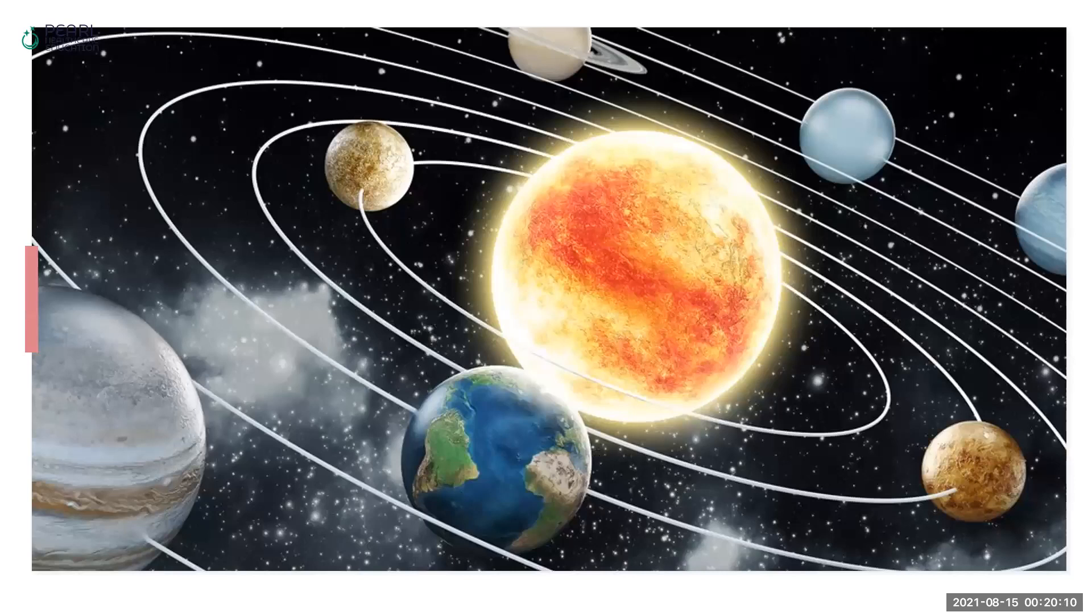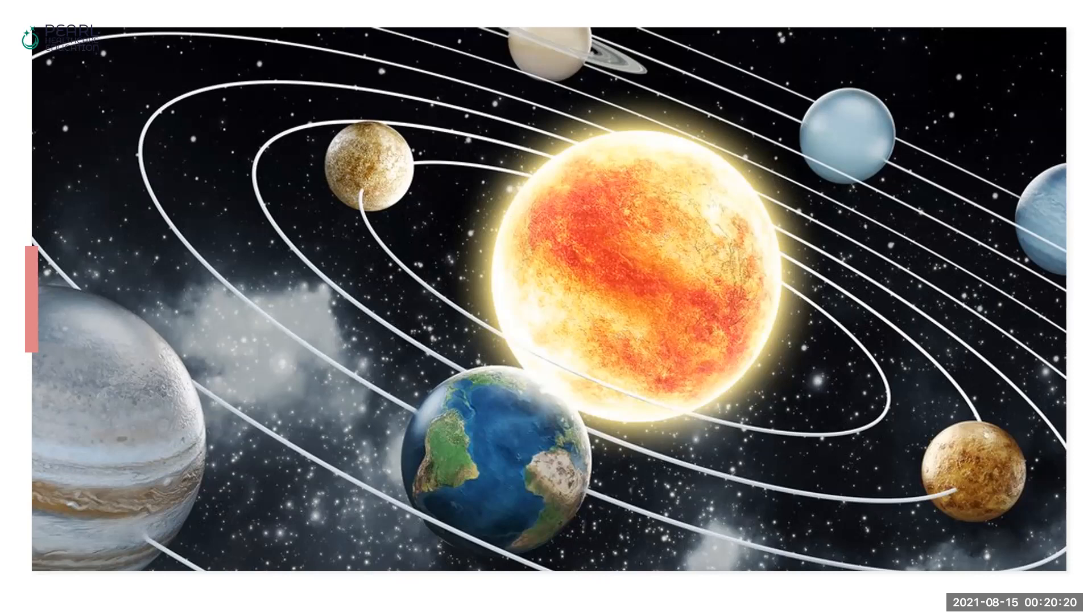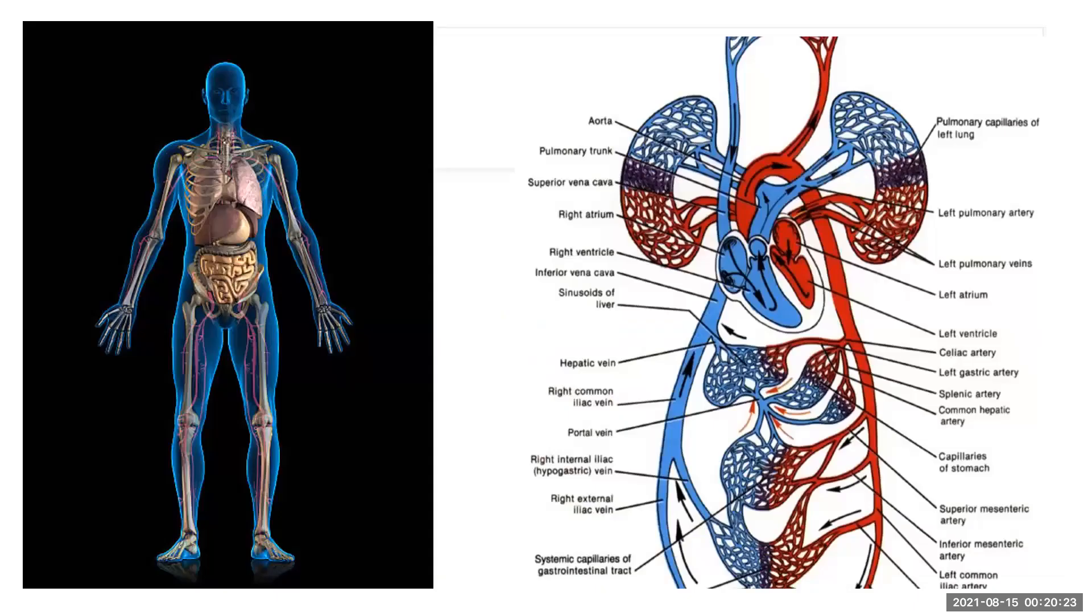Then solar system. There are many planets which are moving around the sun without colliding with each other and they're working on their own pace. Then human body is another example of system where different interrelated systems within the human body are working together to make sure that human body is functioning well.